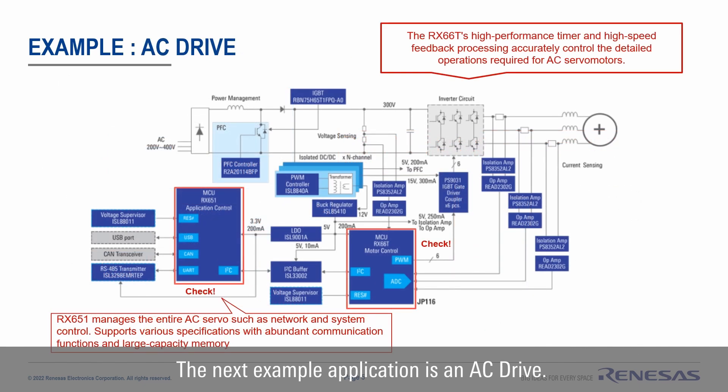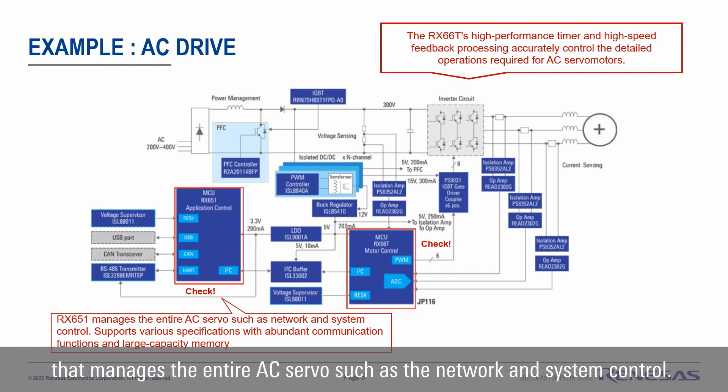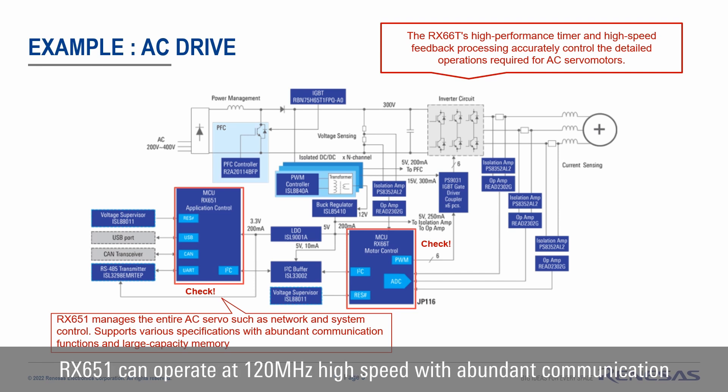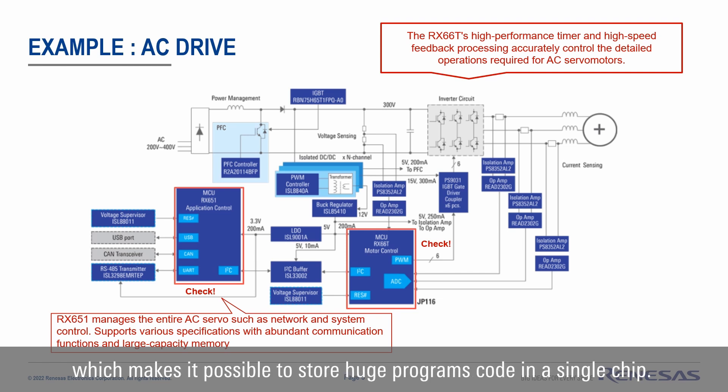The next application example is AC drive. Two RX MCUs are being used here. The first is the RX651, which is used as a main controller to manage the entire AC server such as network and system control. The RX651 can operate at 120MHz with abundant communication functions. In addition, it has a large built-in flash memory of up to 2MB, which makes it possible to store large program code in the unit.